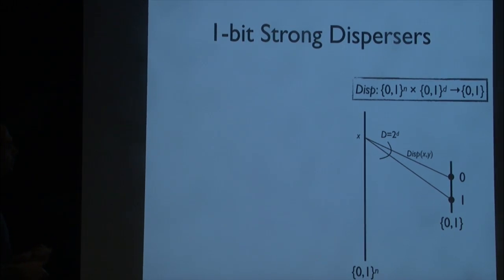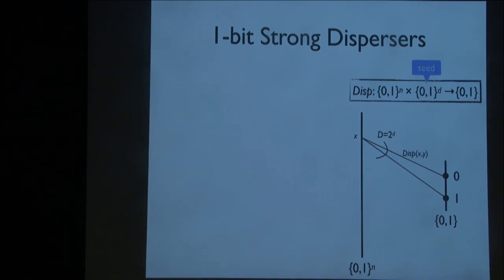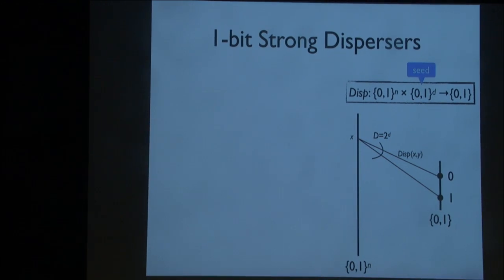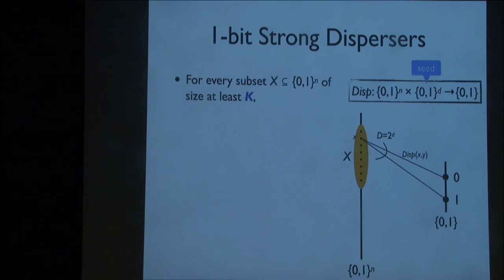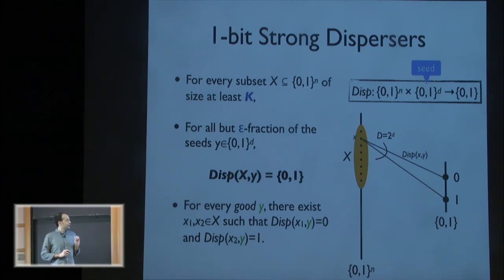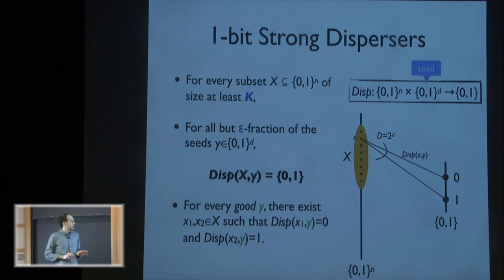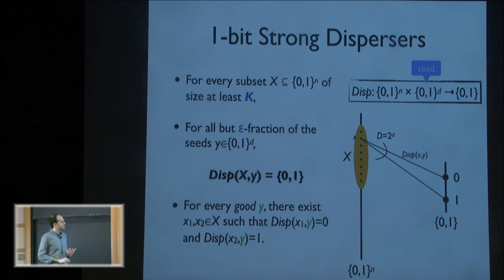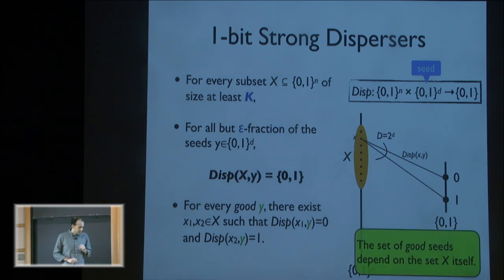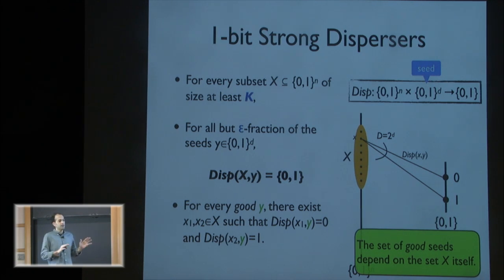What do we want from this function? The second input is called a seed. We want that for every subset of the left-hand side which is large enough — of size at least capital K — for all but an epsilon fraction of the seeds, when I evaluate the disperser over all x's in X and on that specific y, I cover {0, 1}. In other words, for every good y — and we have 1 minus epsilon good y's — there exist x1 and x2 such that disperser(x1, y) = 0 and disperser(x2, y) = 1. The set of good seeds is determined by X, so we can't have a global set of good seeds; our set X determines the set of good seeds.